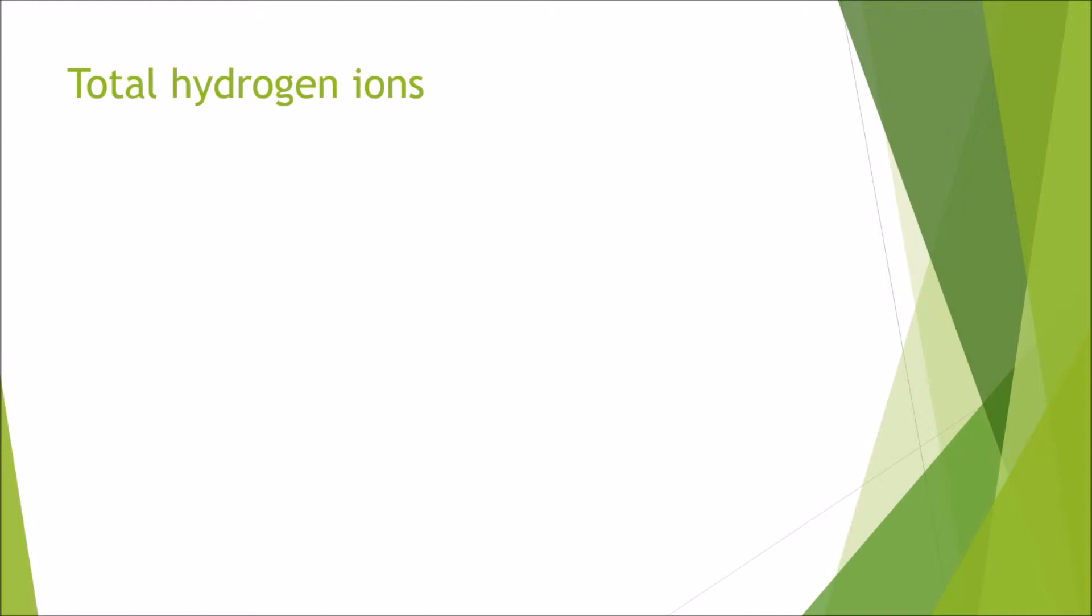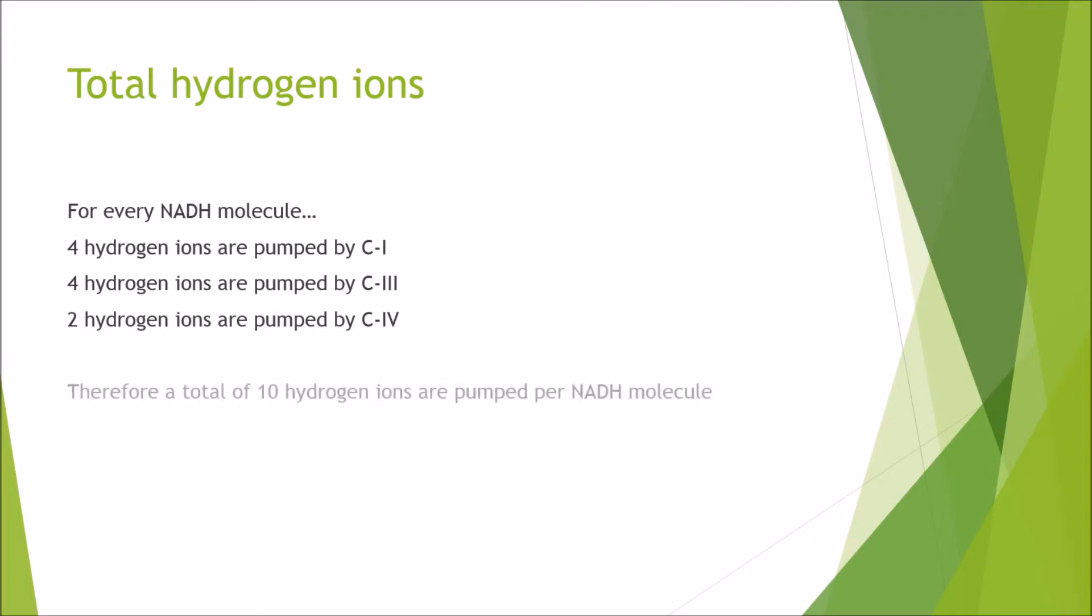What are the total hydrogen ions that we've pumped throughout these complexes? For only a single NADH molecule, we get four hydrogen ions pumped by complex 1. We skip complex 2, we go straight to complex 3 where another four hydrogen ions are pumped. Then we move on to complex 4, two hydrogen ions are pumped. Therefore a total of 10 hydrogen ions are pumped per NADH molecule.